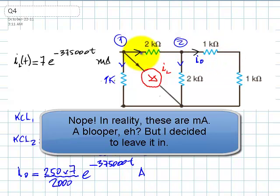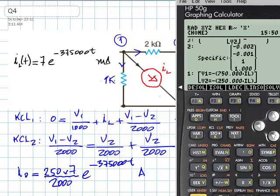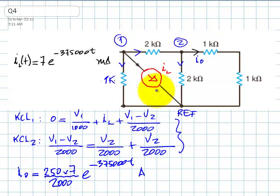I0 would be 250 times 7 divided by 2,000 times the exponential minus 375,000 T. And these are milliamps. And that is our solution. If we were looking for this one, of course, would be V1 minus V2. And in that case, we have V1 is 750 IL, and V2 is 250 IL. There is a negative sign here. So, let's add that negative sign here in front of this expression. That makes sense, because this current is flowing like this, so this current is going to be negative this one. That is our current I0 flowing to the right in this resistor as a function of time for T after 0.